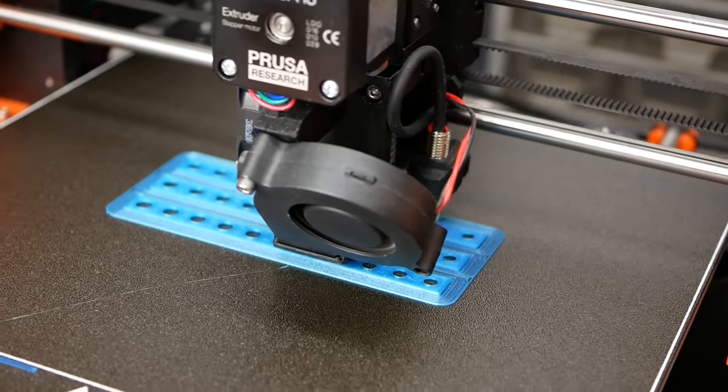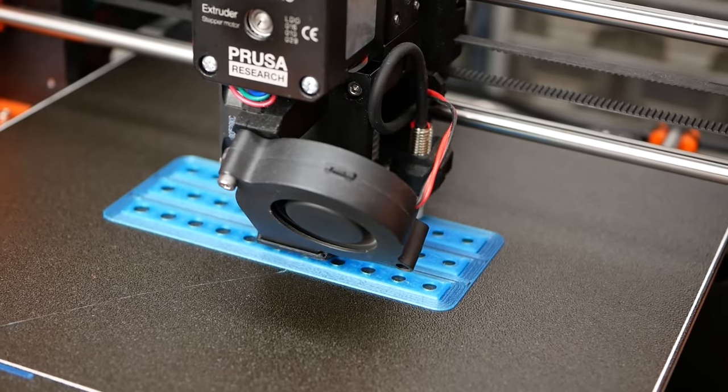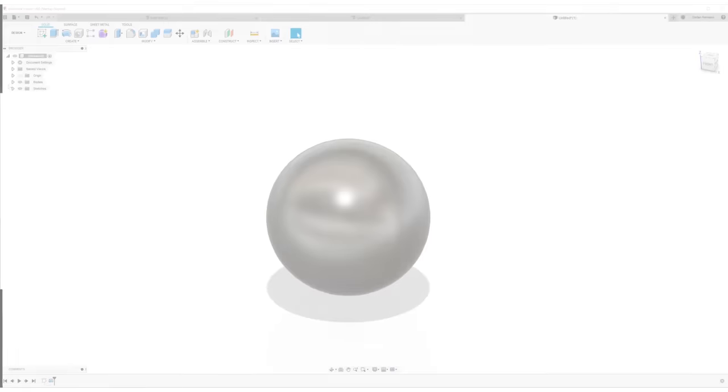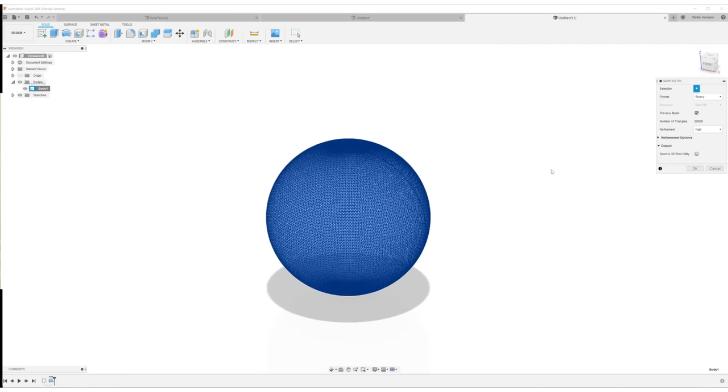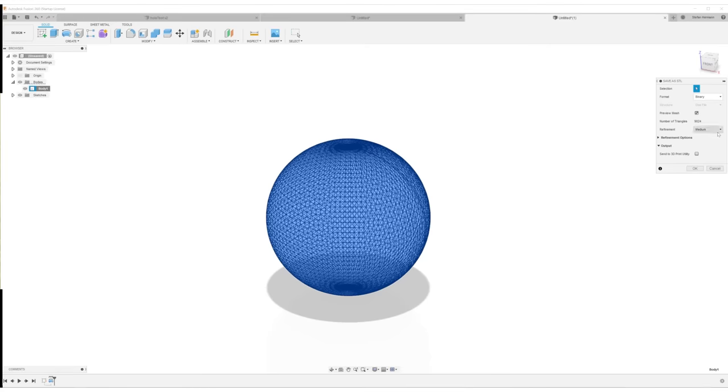First, the material shrinks during cooling and causes dimensions to get smaller. Second, the triangulation of the part. So, when you export an STL from Fusion 360 you can choose the quality and this refers to the amount of triangles that are created.